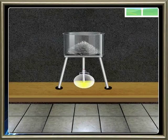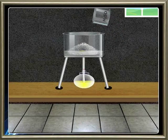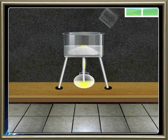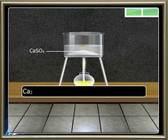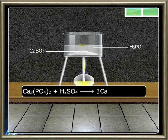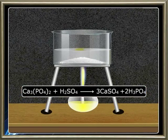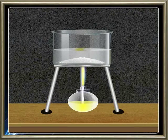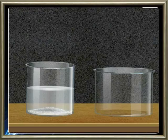Concentrated sulphuric acid is added to the bone ash and heated. It forms calcium sulphate and phosphoric acid. Calcium sulphate is insoluble and therefore it is filtered.